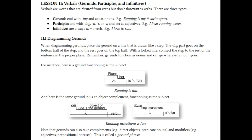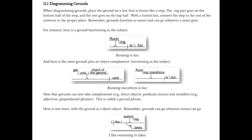Gerunds are words that end in -ing but function as nouns, even though they are formed from verbs. For instance, the word 'running' is a gerund in the sentence 'Running is fun.' You'll see that 'running' is sitting in the subject spot of our diagram. The forked line goes right where the subject goes — the -ing goes on the bottom step and the rest of the word goes on the top step. Gerunds can also take on modifiers or complements.